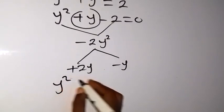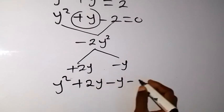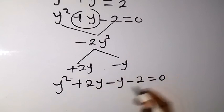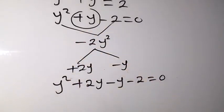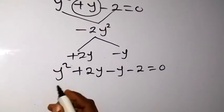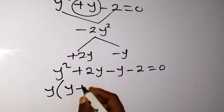So we now have y squared plus 2y, then minus y minus 2 equals to 0. We have replaced this plus y with these two numbers here. To factorize, we group it into two. We have y common in these two here, then y left here, plus 2.